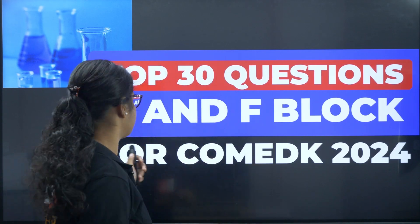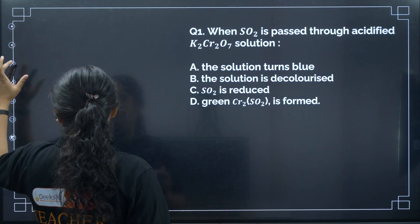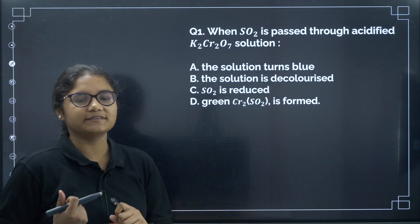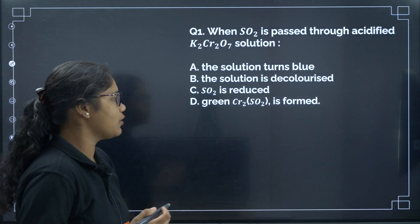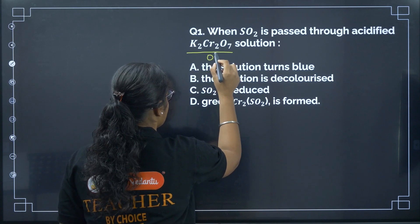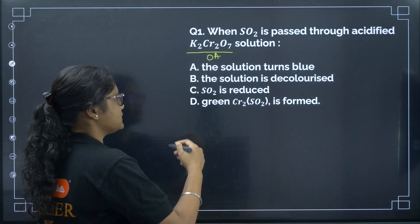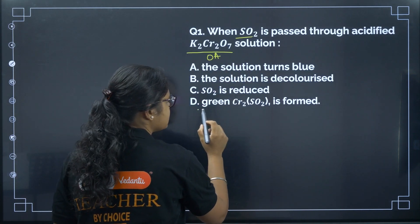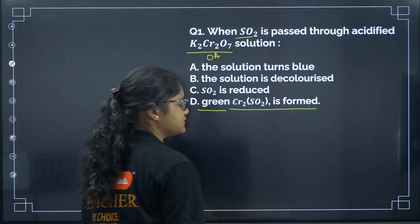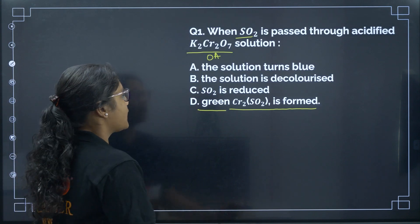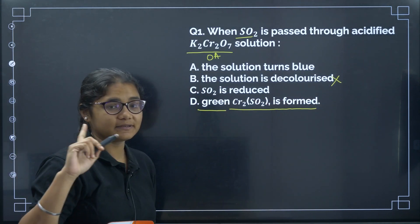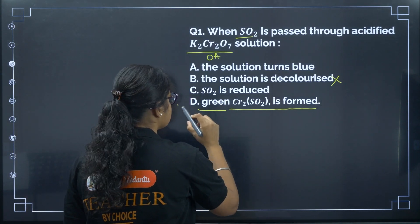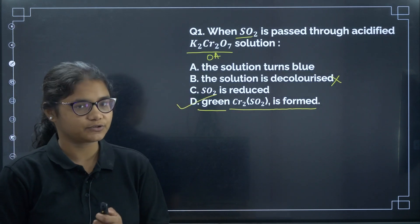Question 1: When SO₂ is passed through acidified K₂Cr₂O₇ solution, what happens? K₂Cr₂O₇ is a very good oxidizing agent, so it will oxidize SO₂ and as a result, a green color Cr₂(SO₄)₃ is formed in the reaction. Note that decolorization happens in the case of permanganate, but in K₂Cr₂O₇ a green color solid is formed. The correct answer is option D.